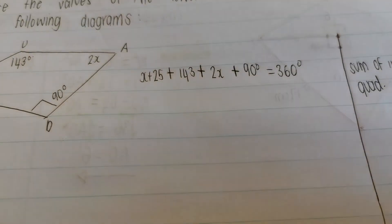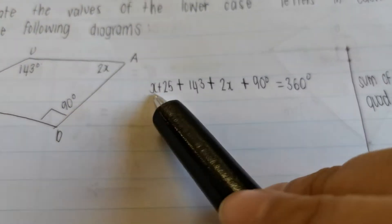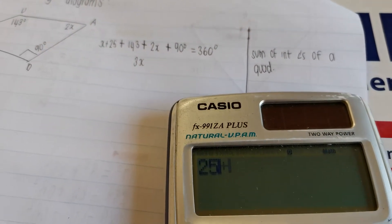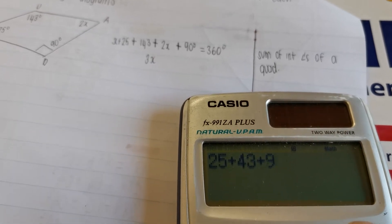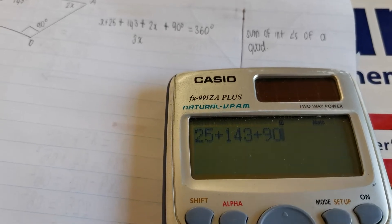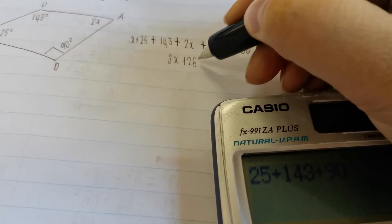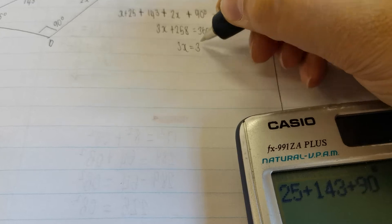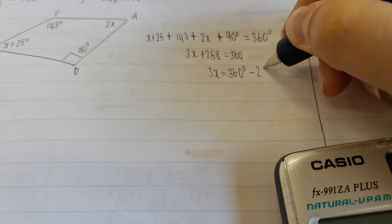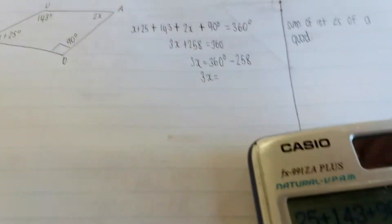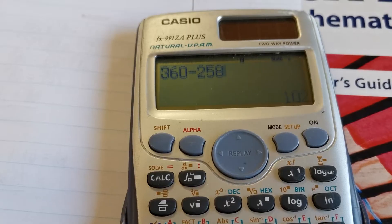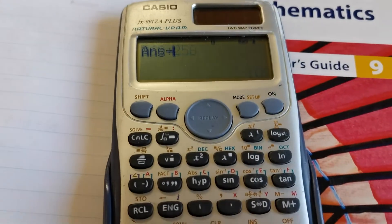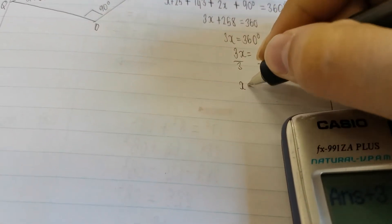Now it's just algebra. X plus 2X gives 3X. Working out the constants: 25 plus 143 plus 90 equals 258. So 3X plus 258 equals 360. Taking 258 over gives 3X equals 222 — then dividing by 3 on both sides — X is equal to 34.